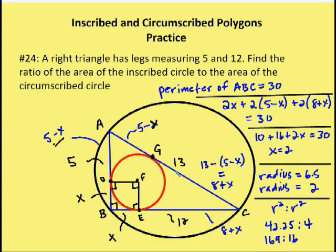For the circumscribed circle, since angle ABC is 90 degrees, arc AHC is 180 degrees, making AC a diameter equal to 13, so the circumscribed radius is 6.5. The ratio of areas is π r² to π r², and since π cancels, we get r₁² to r₂² = 6.5² to 2² = 42.25 to 4, which as integers is 169 to 16. That's the answer.